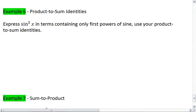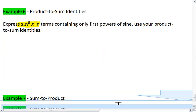For example, go ahead and instead of using power reducing, I want you to use these product-to-sum identities to express sine to the fifth x in terms containing only first powers of sine. If you want to try that on your own first, you can go ahead and follow along with the videos.